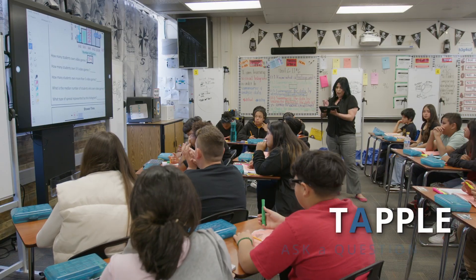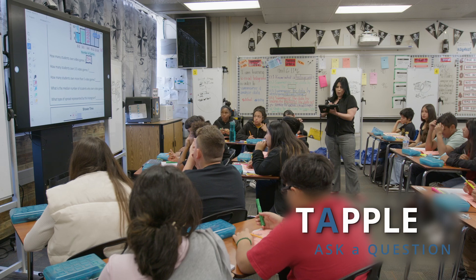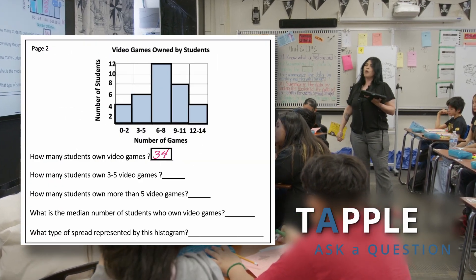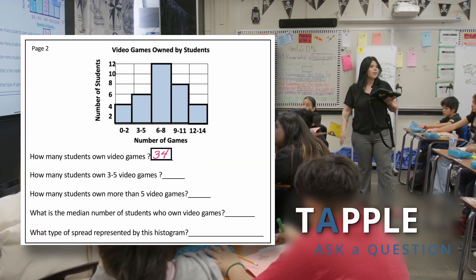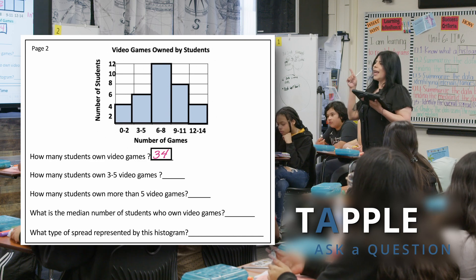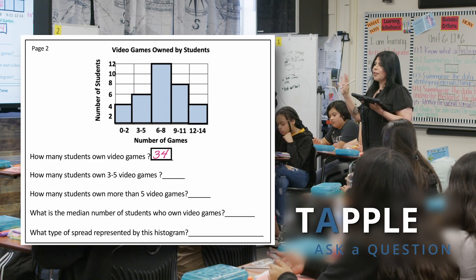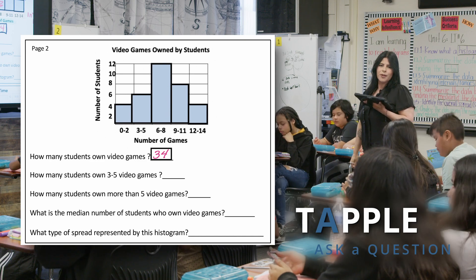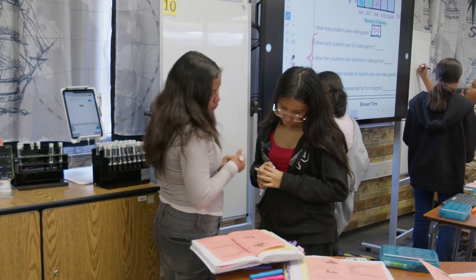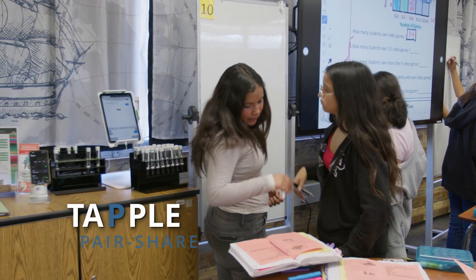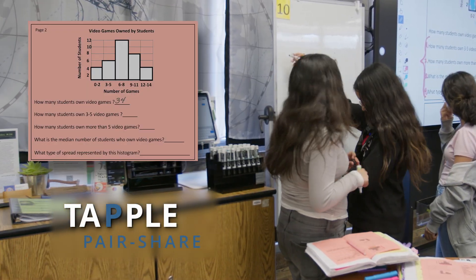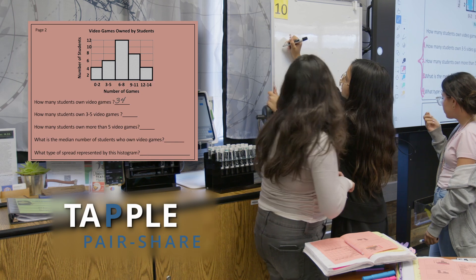Here's what I'm going to have you do: go to your whiteboards — the same ones you were at earlier. You're going to answer those four questions. You need a whiteboard marker, and you can take an eraser if you'd like. Number one is six students, because three to five video games.